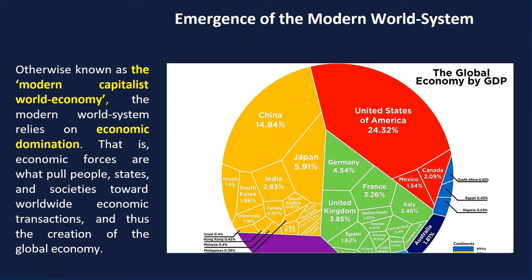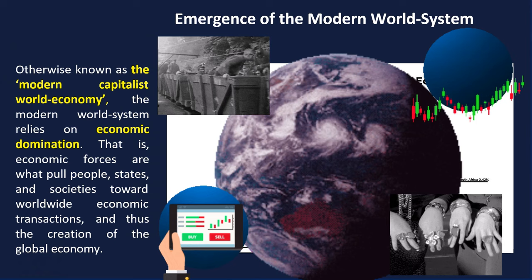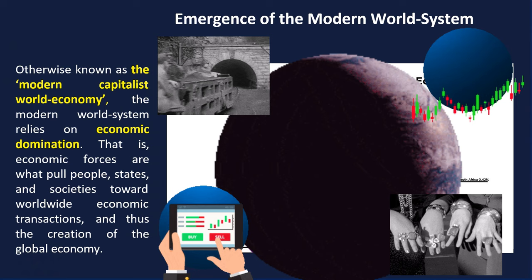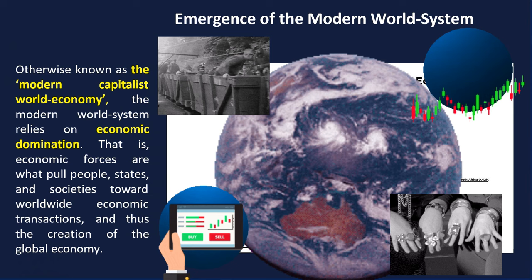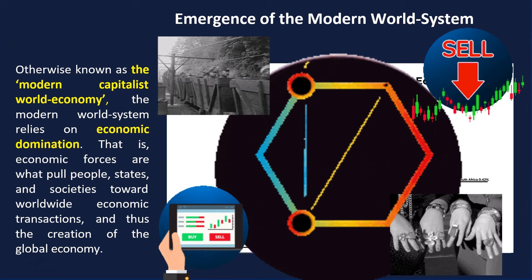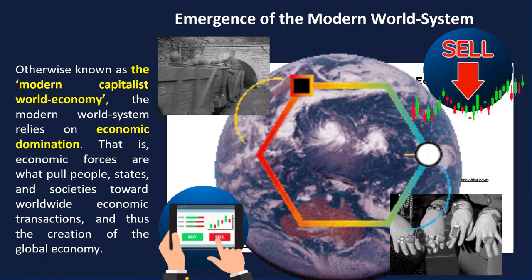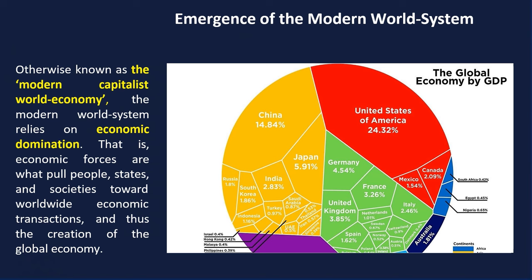The modern world system relies on economic domination — economic forces that pull people, states, and societies toward worldwide economic transactions. These economic forces, in the form of trade, finance, and so on, are what pull people and states and societies together to create linkages and connections. When you have these linkages, it paves the way for the creation of a globalized economy — not concentrated on a specific region, but going on worldwide.